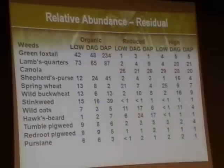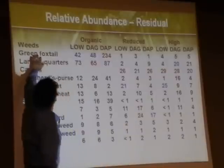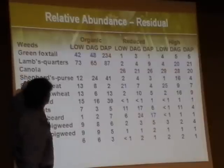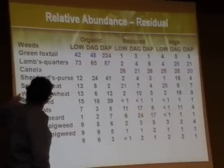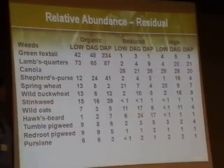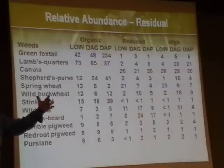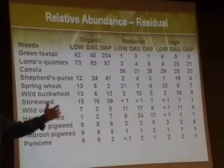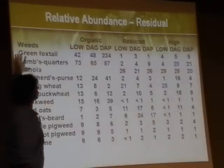Most of the weeds we see here — we're seeing a lot of green foxtail in the organic plots, lamb's quarters, and shepherd's purse. Then you get down to lower numbers. As was mentioned previously, where are the wild oats? The wild oats are actually worse in the no-till plots than in the organic plots. It's not true on every organic farm — we've done some work, and the most wild oats you can fit in one square meter is about 500. We've seen those in some organic fields, and they can be bad, but at Scott they're not.